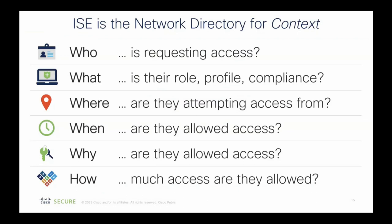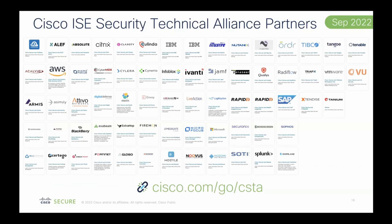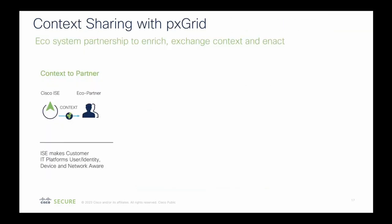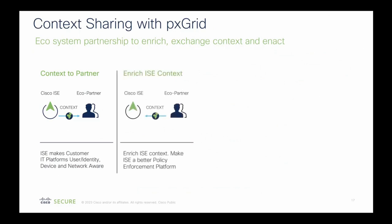We think of ISE as the network directory — we know everything on the network as endpoints come in or leave. This gives us context: the who, what, when, where, how, and why of an endpoint being on the network, which is extremely useful for other security services. These are examples of our partners on the Cisco Security Technology Alliance who have signed up as MDM or PX Grid partners. They typically subscribe to topics in ISE like the session directory to get information out and share that context.